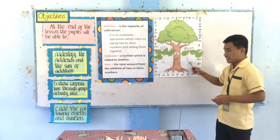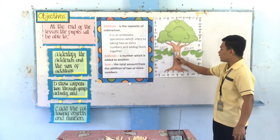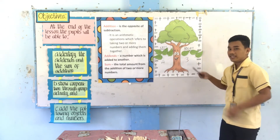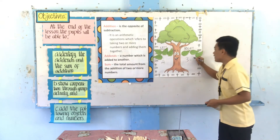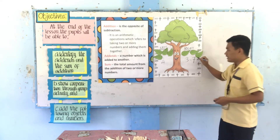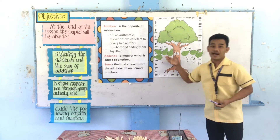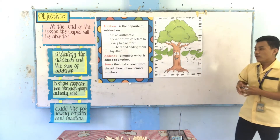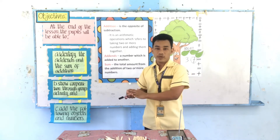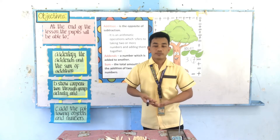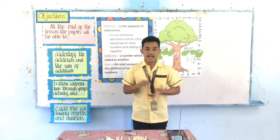Four plus three — four added to three. One, two, three, four, five, six, seven. It's equal to seven. Yes, very good — seven leaves. There were seven leaves pasted on the tree. Now, in addition there are two variables: the addends and the sum. What do you mean by addends? Everyone read: addends is a number which is added to another.